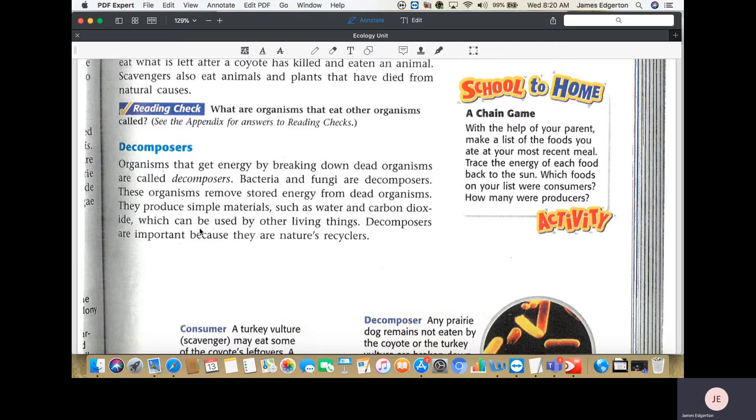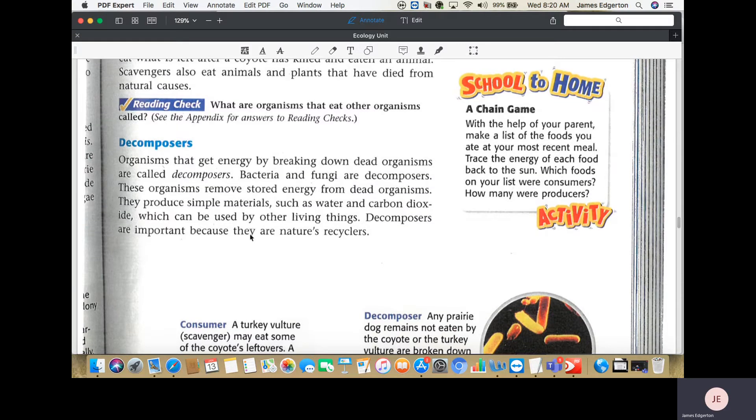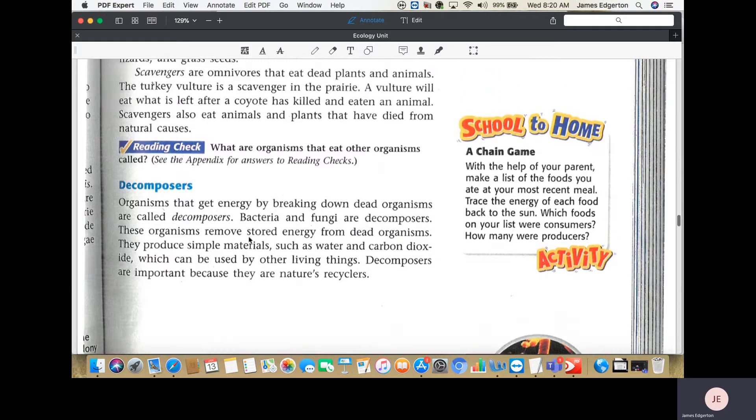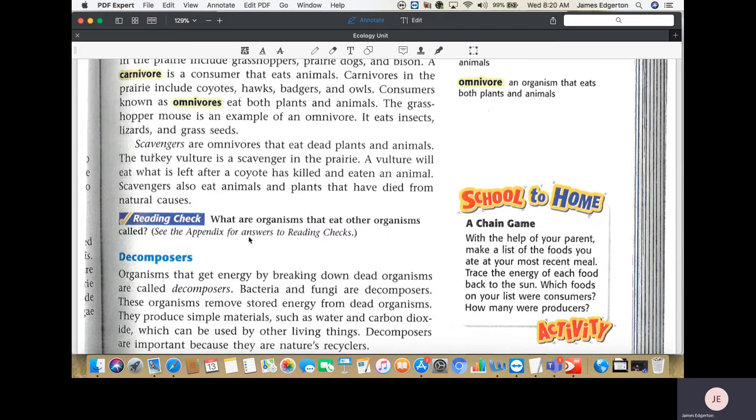Organic means it was alive, or it is alive, was made, and when it dies, it's still organic. But decomposers just have a different means of consuming their food than, say, some type of scavenger.